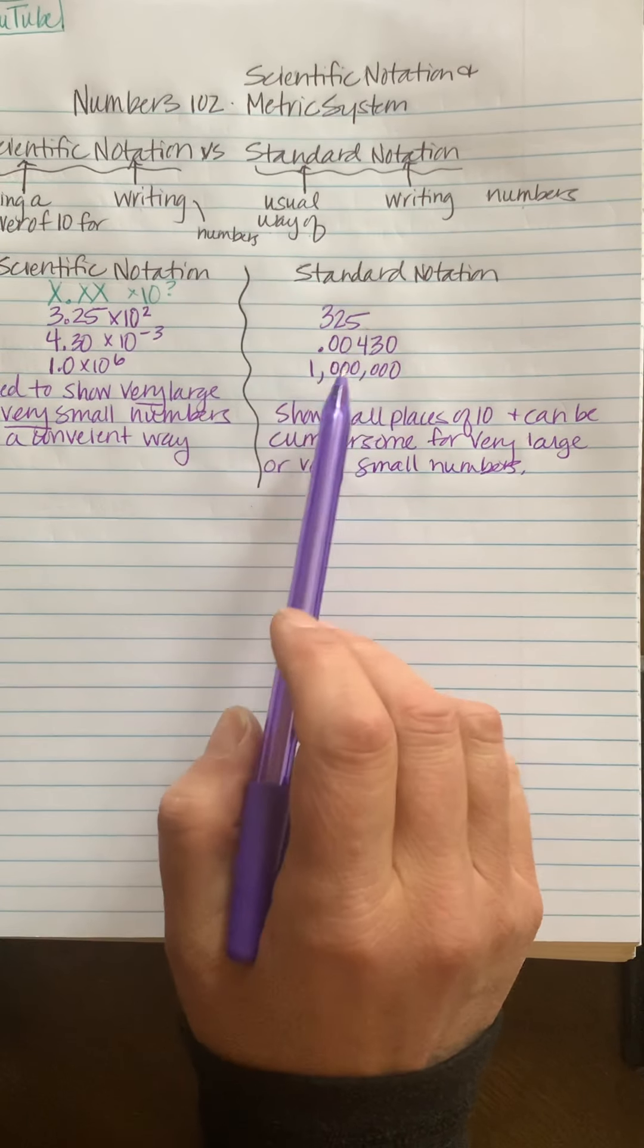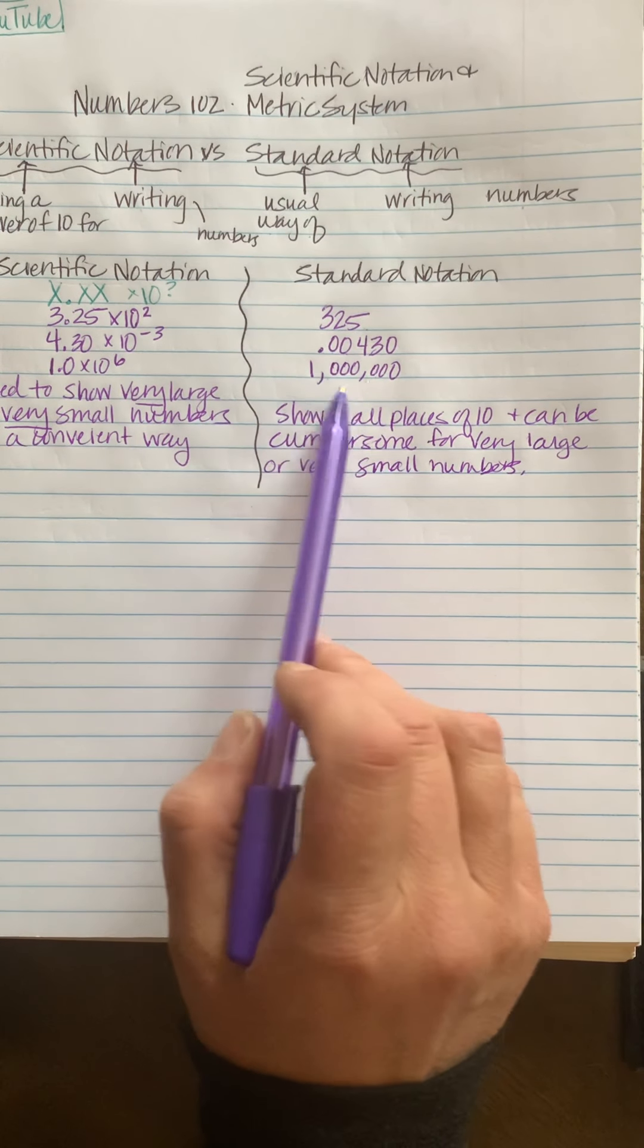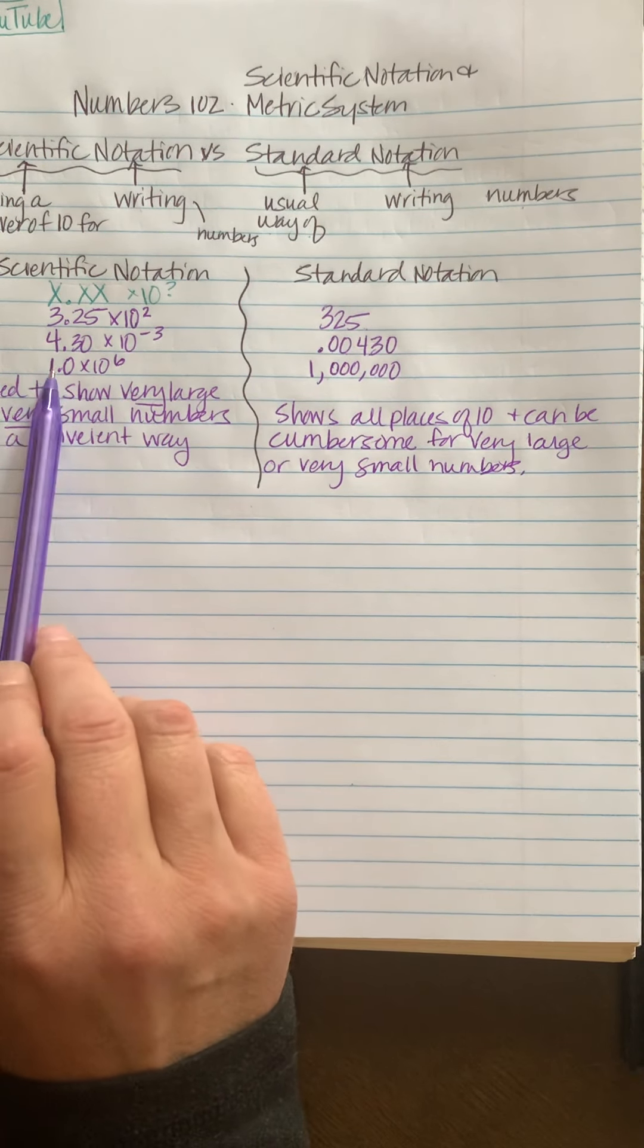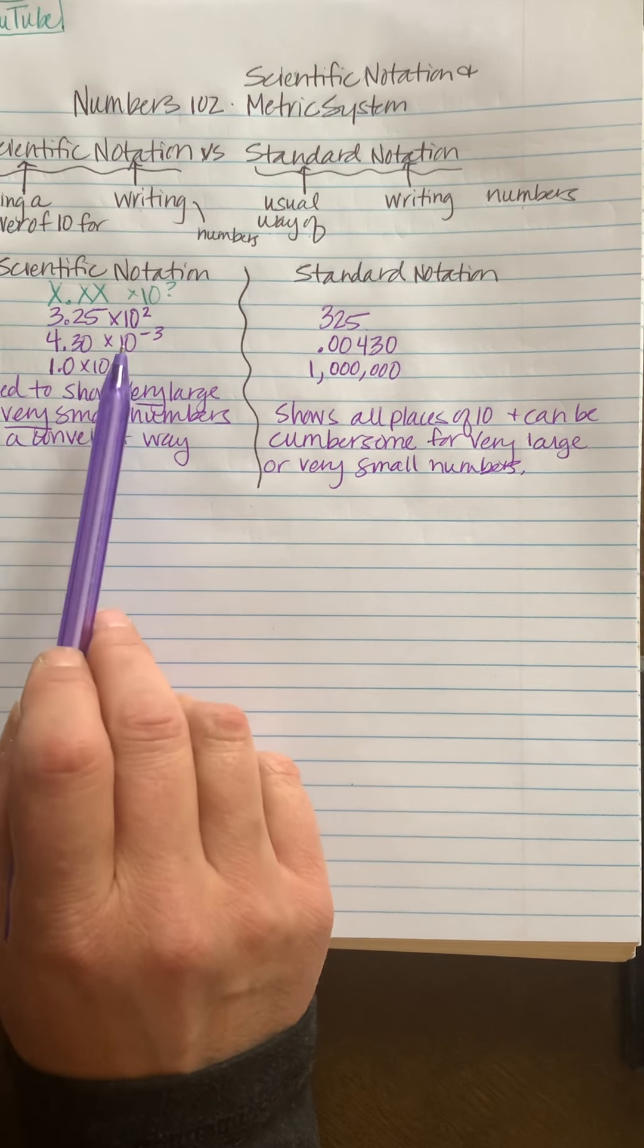So when we have these numbers like 1 million, instead of showing all the zeros, we show 1.0 times 10 to the 6.